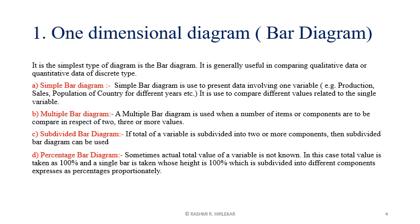Now we will discuss about subdivided bar diagram. If the total value of the variable is sub-divided into two or more components, then a subdivided bar diagram can be used. In this bar diagram, the bars are broken or sub-divided into segments, where each segment is proportional to the values of the components, and a single main bar represents the aggregate total value of the variable. To show different components, different shades are used.